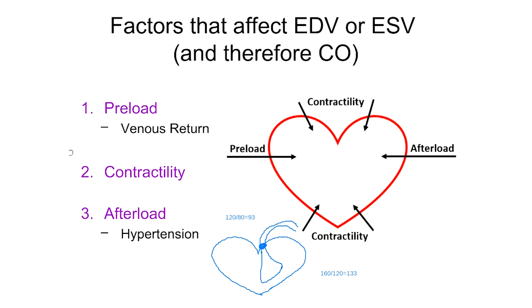The more afterload increases, the more back pressure there is, and the more the heart has to generate a higher force each time it contracts to move blood from the left ventricle into the aorta. That's why hypertension — even slightly elevated blood pressure — is not good for the heart. Every time blood pressure goes up, the heart has to generate more force with each contraction due to that afterload.